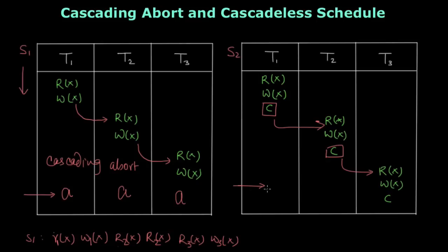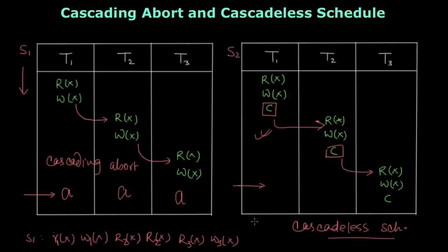In this case, even if some transaction were to abort, it will not cause cascading abort. As I mentioned in the previous video, a committed transaction is not desired to abort — it has already been saved to disk, so it is already over. There is no chance of aborting T1 after commit. This is a cascadeless schedule — in this kind of schedule, cascading abort will not occur because all transactions are reading committed data.